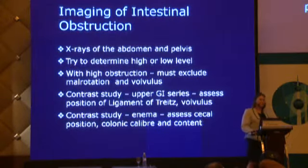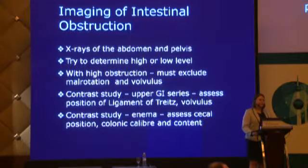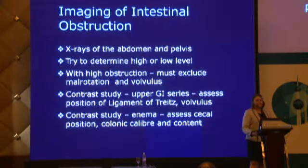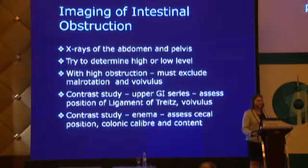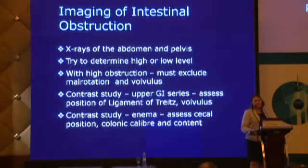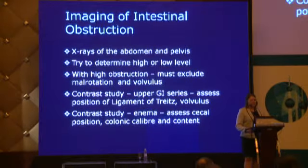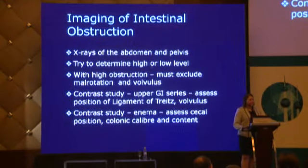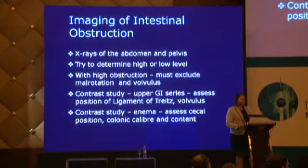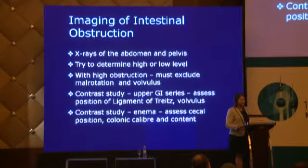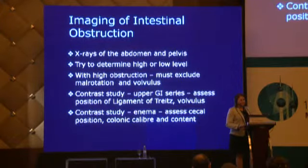X-rays of the abdomen and pelvis, along with ultrasound, are frequently the mainstay of initial imaging in children, because kids move and both are fairly quick — you can chase a child with ultrasound but not with a CT machine. The idea is to determine whether it's a high or low obstruction to guide future imaging. For high obstruction you must exclude malrotation and volvulus, so after the x-ray we use an upper GI series to look at the ligament of Treitz and exclude volvulus. For low obstruction, a contrast enema is used to evaluate the cecal position, caliber, and whether content is normal.